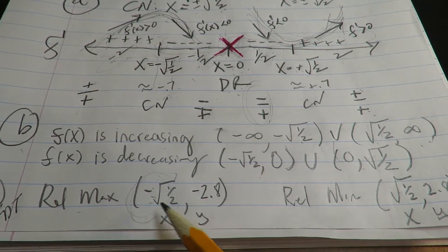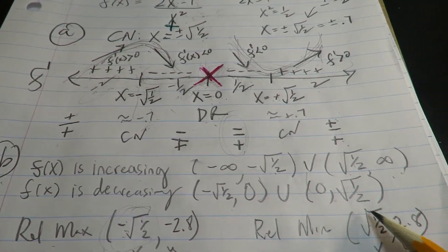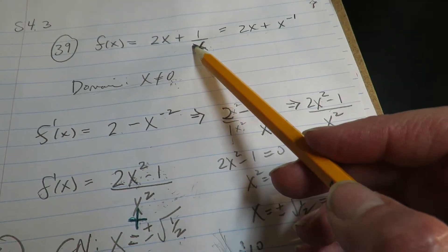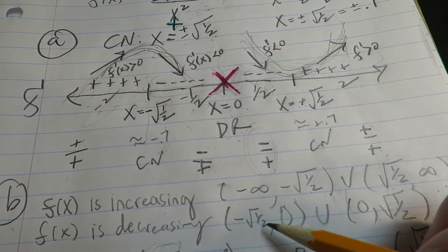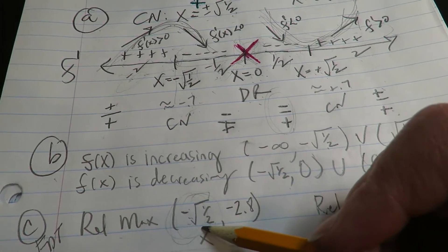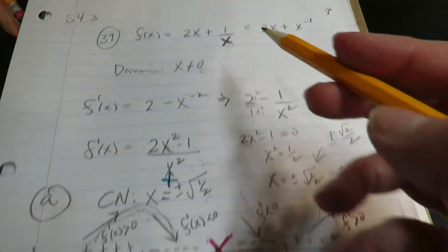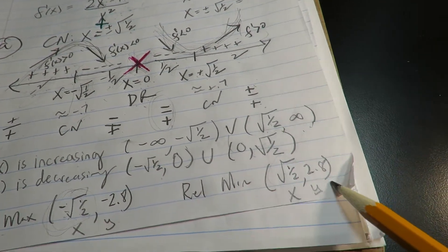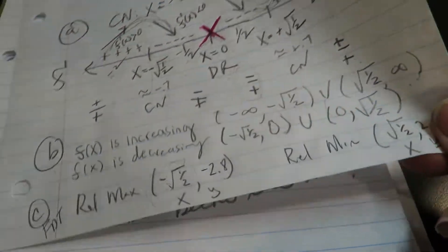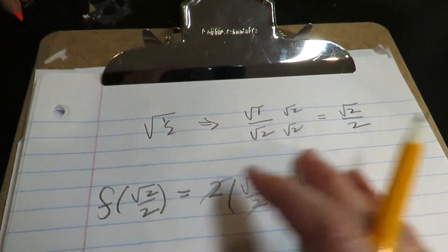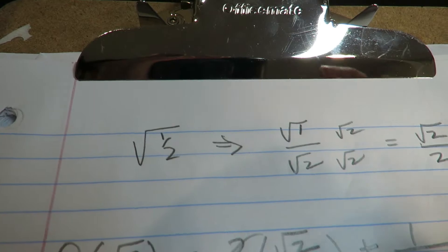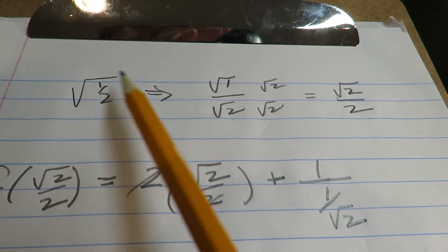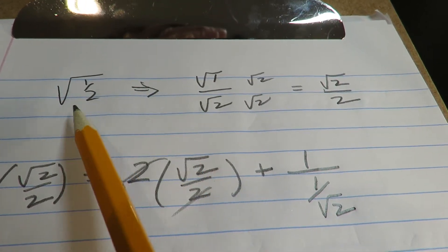So then once you find your x values for your max and min, you have to plug that back into the original. Now, I did this in my calculator. I used negative 0.7, and I plugged it in here. And I got the calculator answer for negative 0.7 and positive 0.7. But I figured some of you actually might want to see the algebra. So I guess it's more arithmetic, but you know what I'm saying.